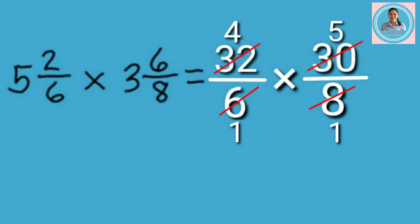Now, let's multiply the new numerators and the new denominators. Let's multiply now. 4 times 5 equals 20. And then, 1 times 1 equals 1.